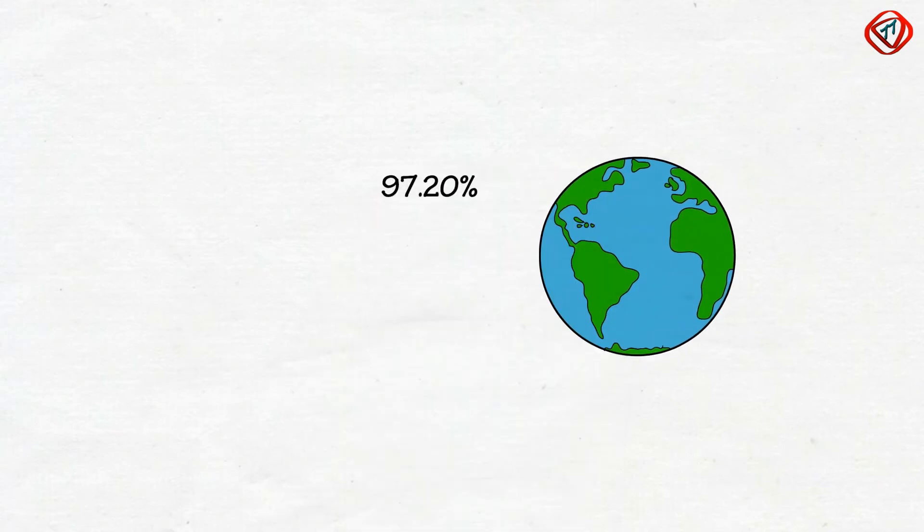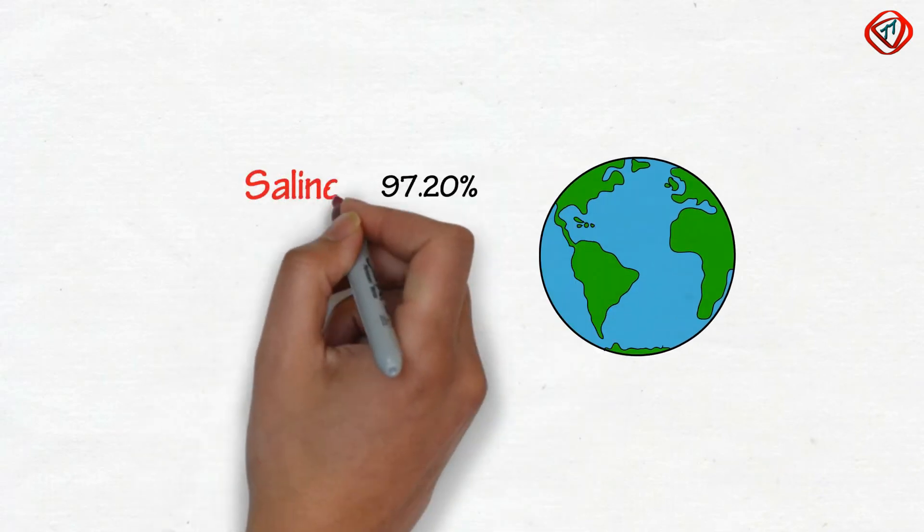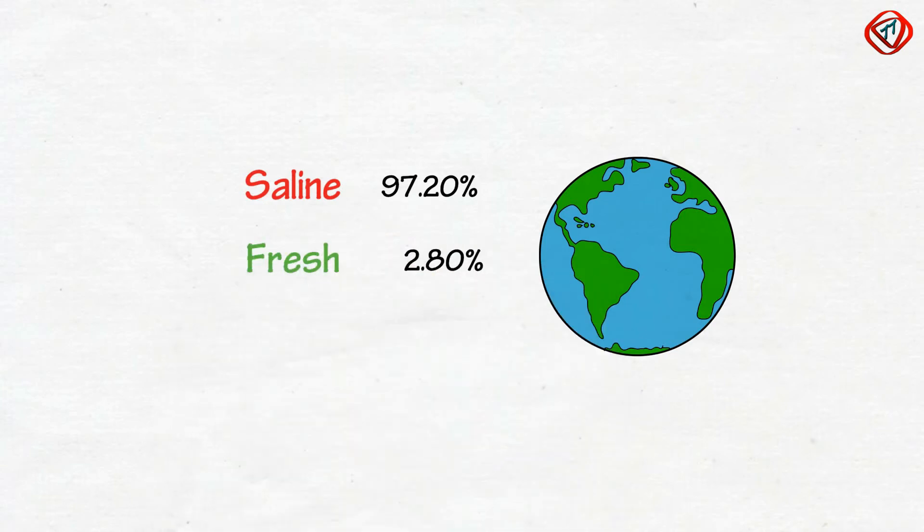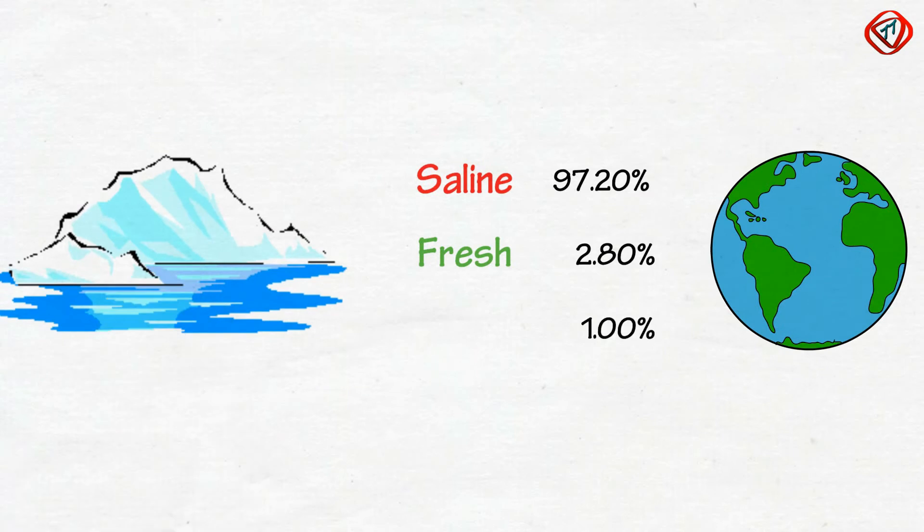97.20% of the total water is saline and is unfit for drinking. Remaining 2.80% is fresh but most of it is in frozen state. So only 1% of the total water is available for drinking.